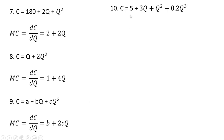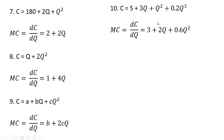Example 10. Here we have a cubic cost equation. The derivative of 5 is 0. The derivative of 3q is 3. The derivative of q squared is 2q. And finally, the derivative of 0.2q raised to the third power is 0.6q squared. The 3 in the exponent comes down in front, so 3 times 0.2 is where this 0.6 is coming from. We subtract 1 from that exponent — 3 minus 1 leaves us with an exponent of 2.